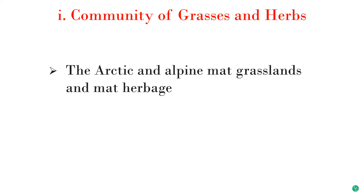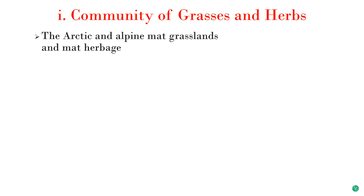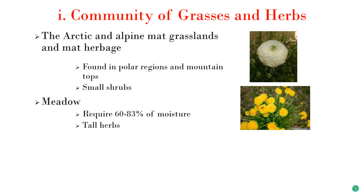The community of grasses and herbs includes annual or perennial grasses and herbs, with three subtypes: arctic and alpine mud grasslands and mud herbage, meadow, and pastured or cultivated lawn. Arctic and alpine mud grasslands and mud herbage are commonly found in polar regions and mountain tops, including mostly small shrubs. Meadow represents an intermediate link between mesophytes and hydrophytes, requiring around 60 to 83 percent moisture content, and consists of tall herbs with long stems.